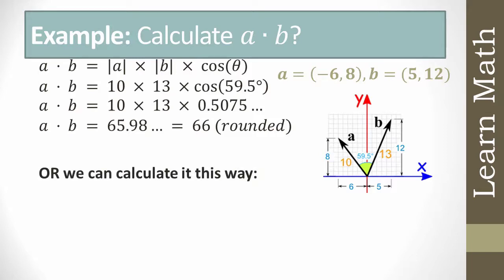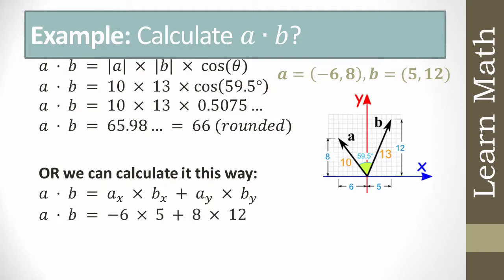Alternatively, we can calculate using components: a·b = (ax × bx) + (ay × by). The x-component: (-6) × 5 = -30. The y-component: 8 × 12 = 96. So a·b = -30 + 96 = 66.